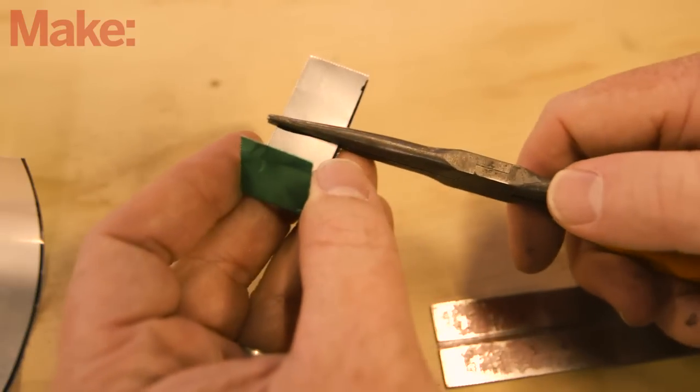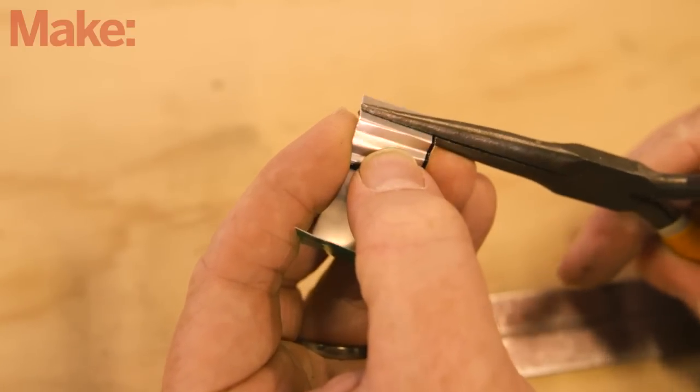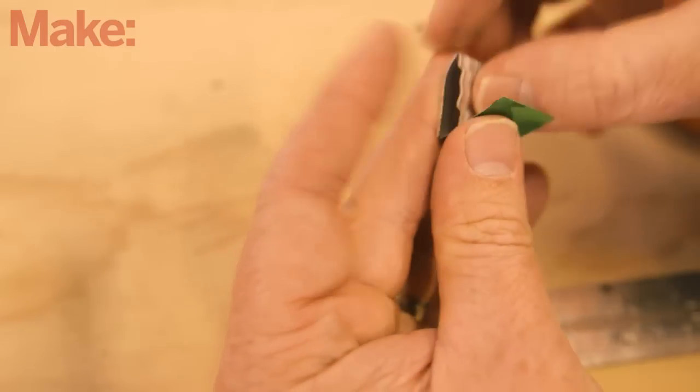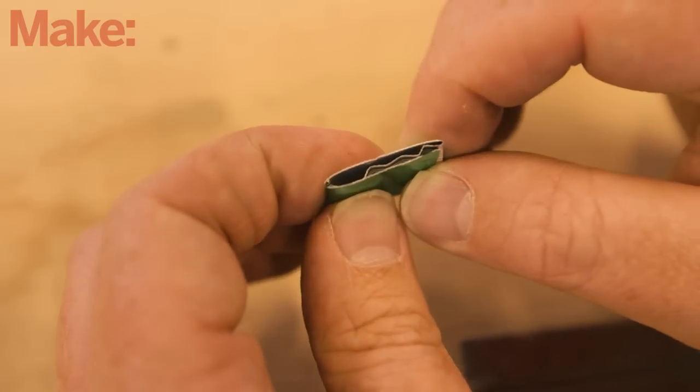The final third should be folded into a corrugated or zigzag pattern using a pair of needle nose pliers or table edge. Then the whole piece should be folded over so the corrugated piece is sandwiched between the two flat pieces.